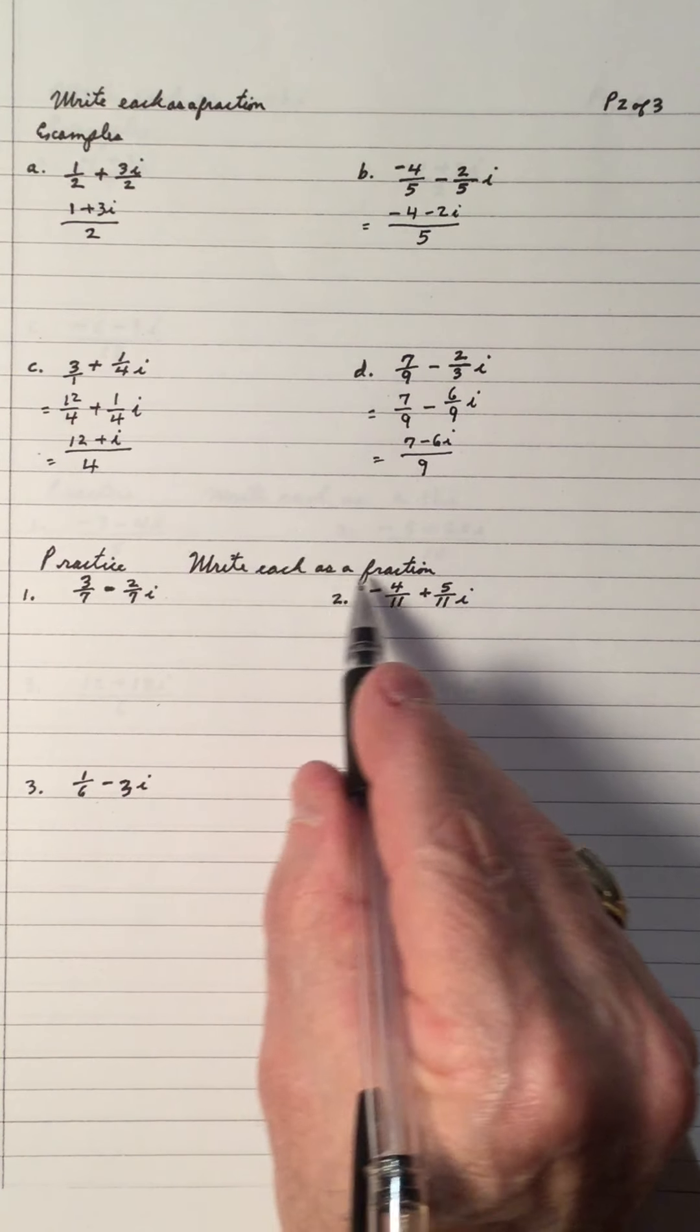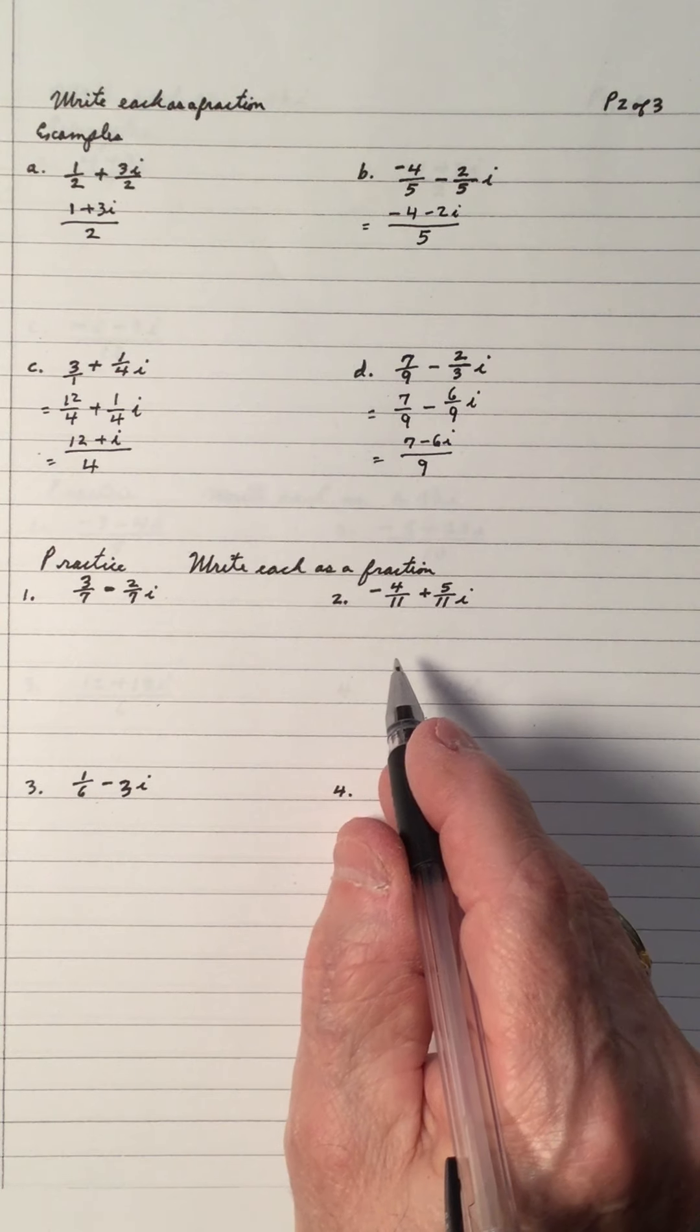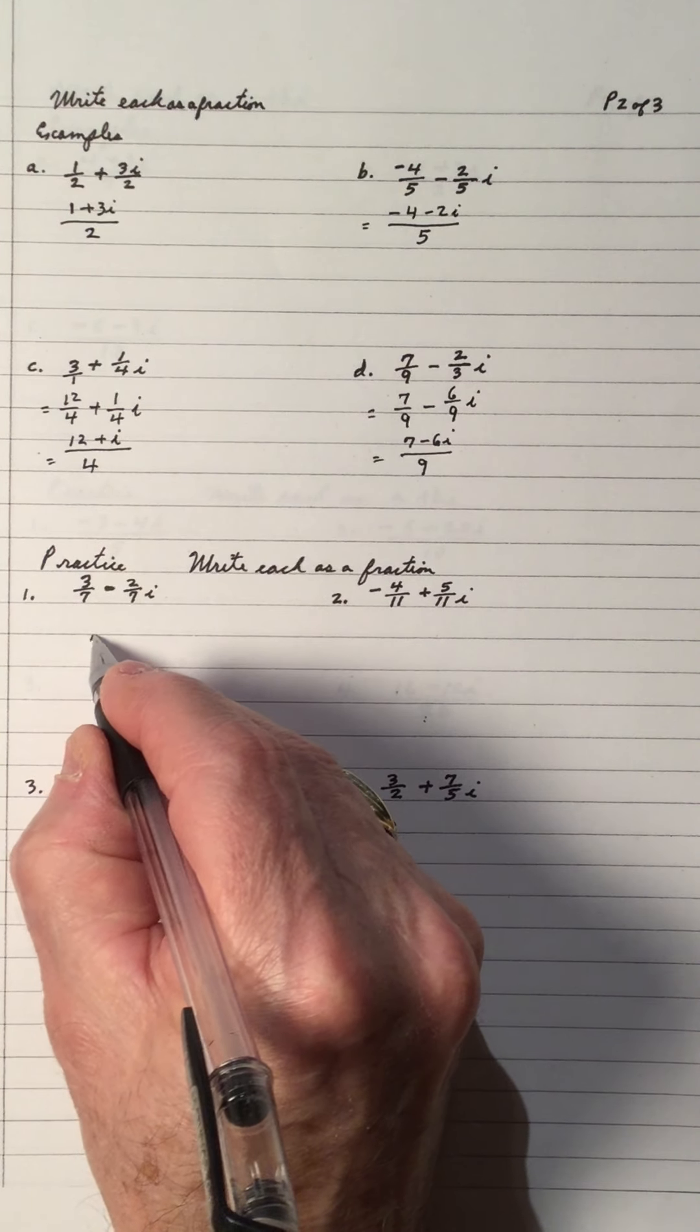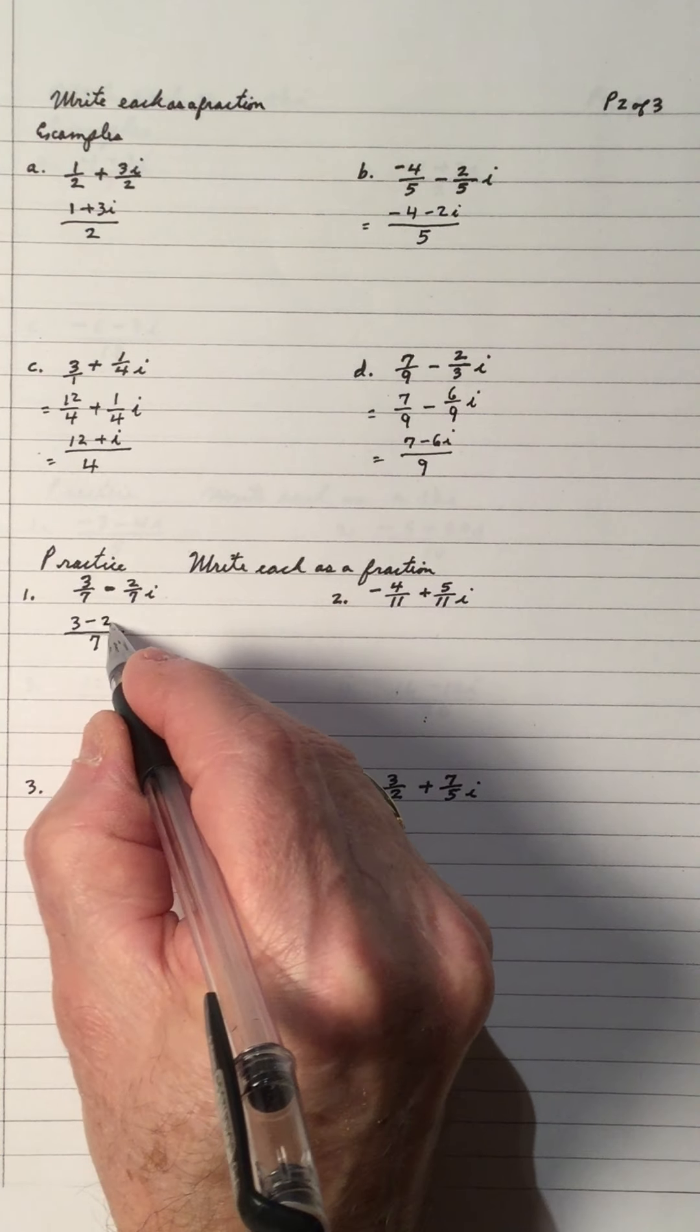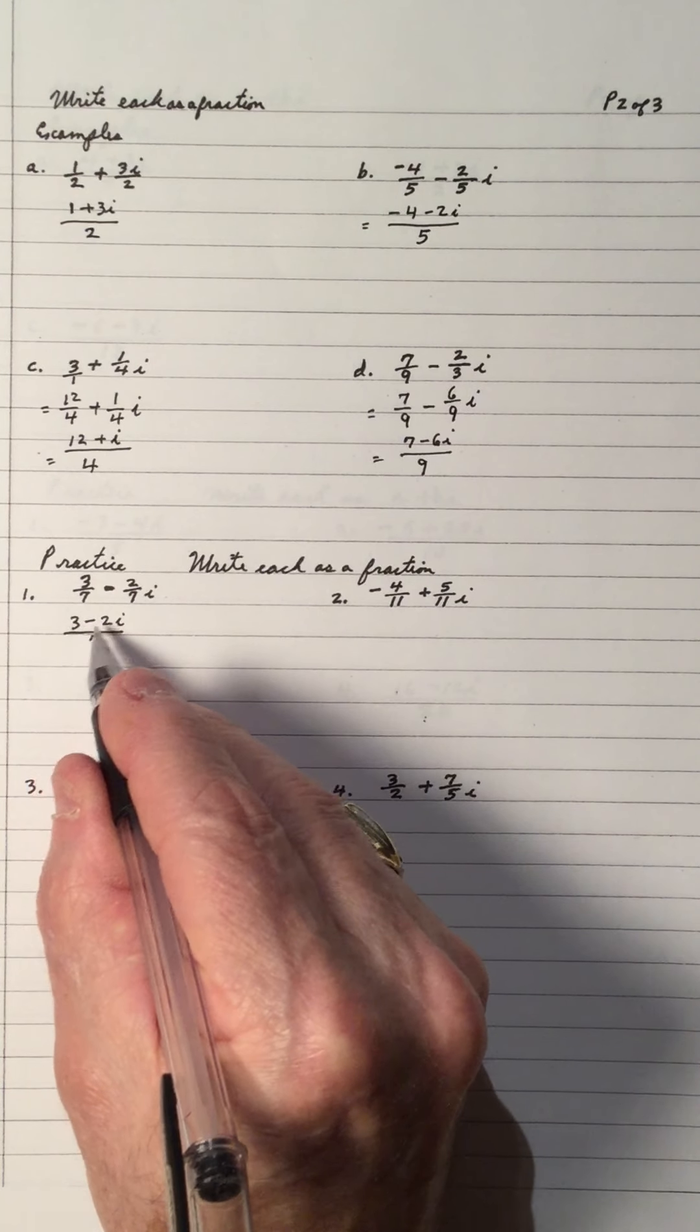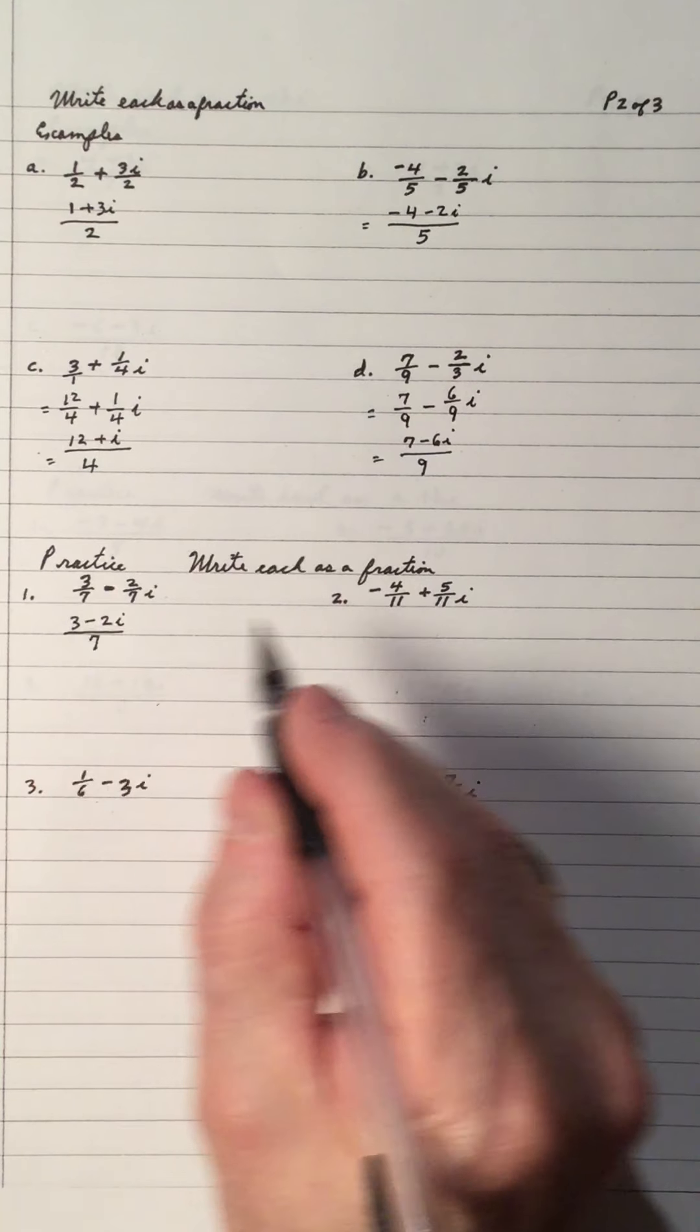Practice. Write each as a fraction. It means pause the video and work each one of these out. And press play when you get them done to see if you're right. Common denominator is 7. So, we get 3 minus 2i. And that's one fraction. We cannot add these. Again, that's a real number. That's an imaginary number. They're not like terms.